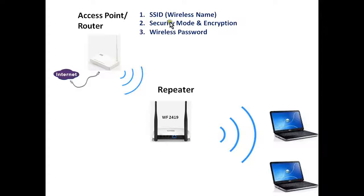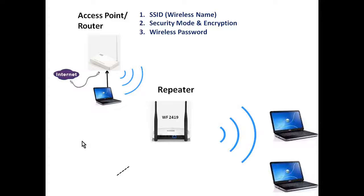To get these settings, we will connect one laptop through a cable or through Wi-Fi to the access point. Then we will open a web browser to retrieve these three settings.